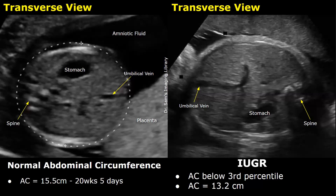Percentiles are used to tell whether values are smaller or larger than normal. If any measurement or value is below the 10th percentile, it is considered abnormal, indicating fetal growth restriction. Values between the 25th and 95th percentiles are considered normal. Regarding abdominal circumference in IUGR, it will be below the 3rd percentile — an AC value of 13.2 centimeters at 20 weeks is less than the 3rd percentile and is considered a small abdominal circumference.